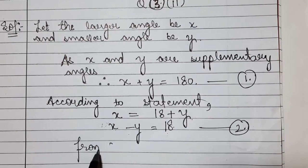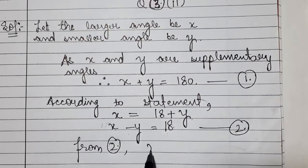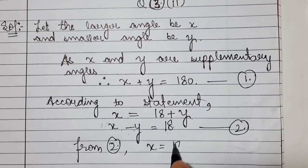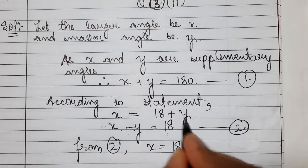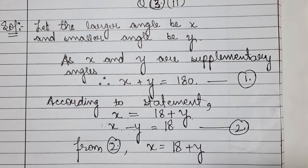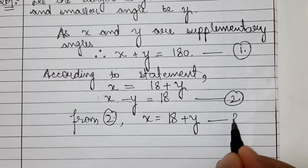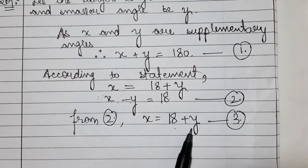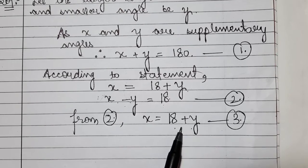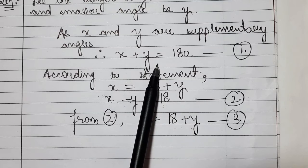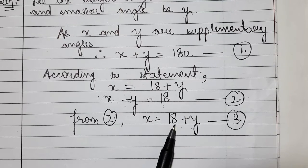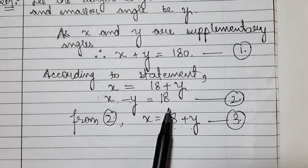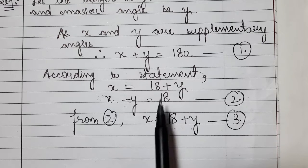From equation 2, x's value in terms of y: x is equal to 18 plus y. This equation gives us x's value. We are putting this in the first equation. Since we derived the value from the second equation, we substitute it into the first equation.